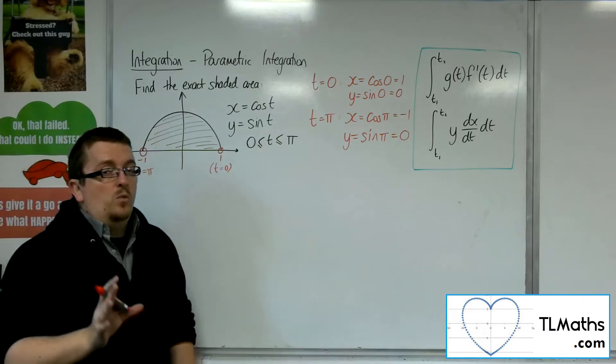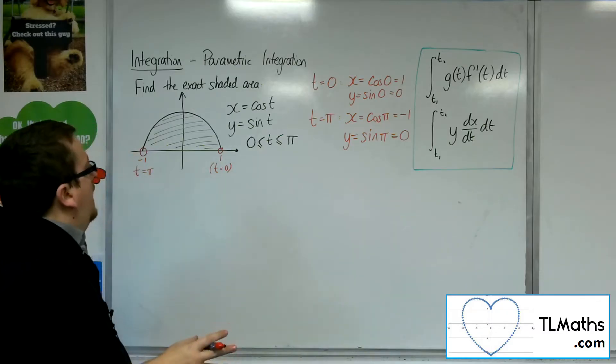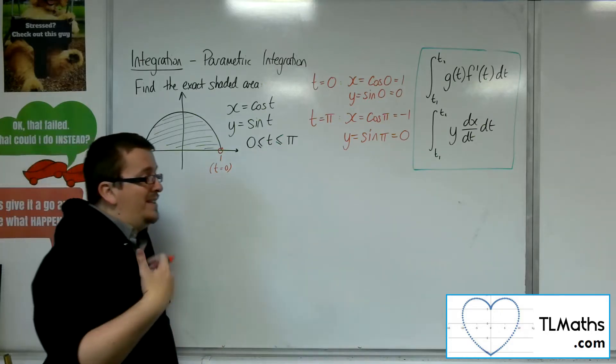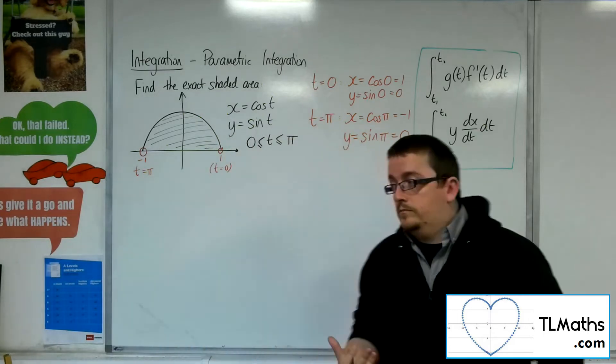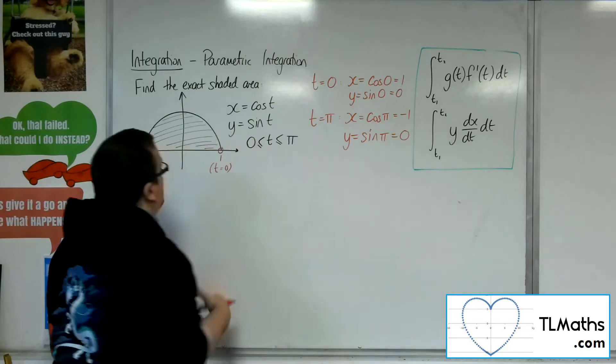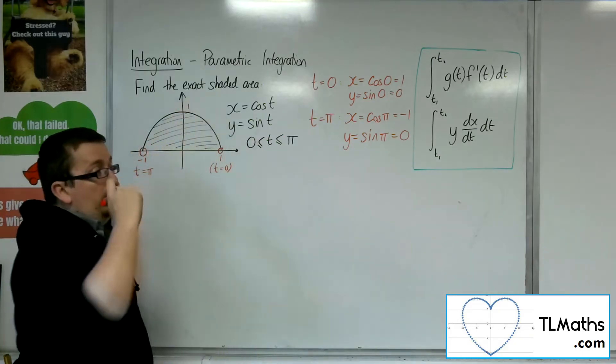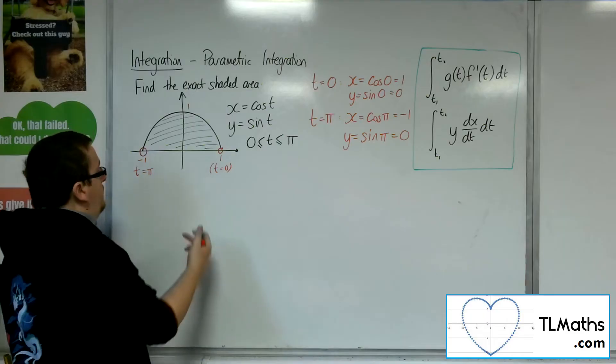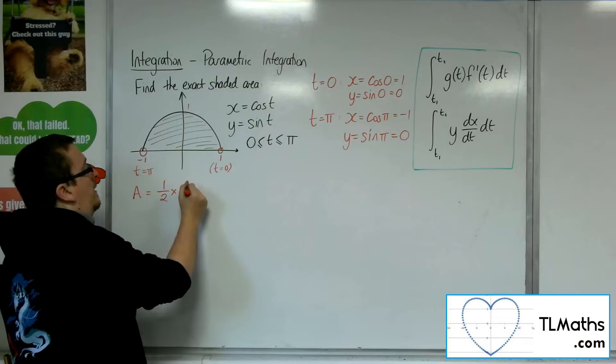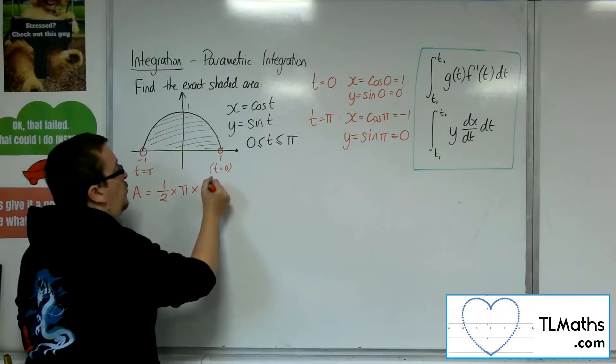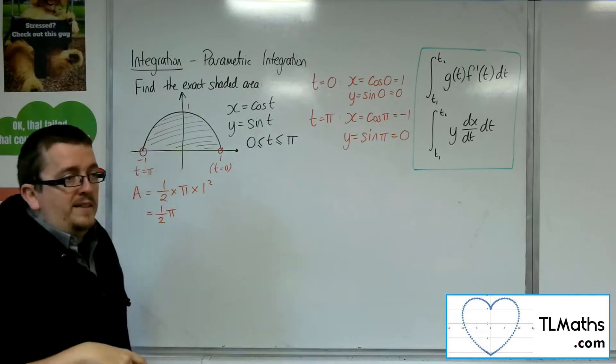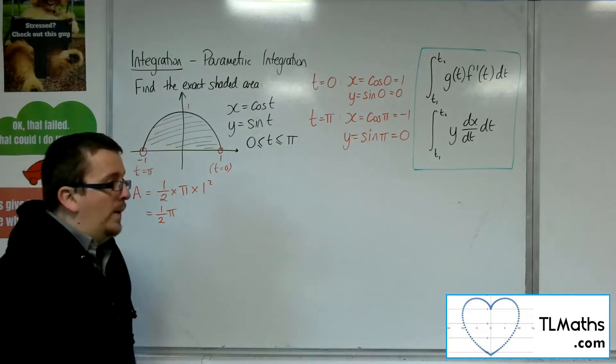So actually what we've got here is a semicircle. If you haven't spotted it yet, this is half of the unit circle. So we can double check. If we're thinking it's a semicircle, we could use a half of pi r squared. So the area should be 1 half times pi times r squared, so 1 squared. So it should just be half of pi. That's what we're expecting the answer to be. So let's check whether that's true.